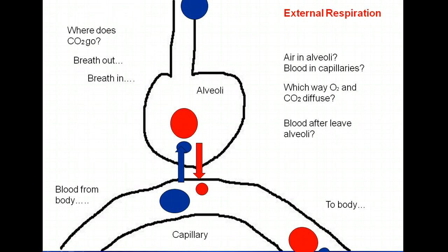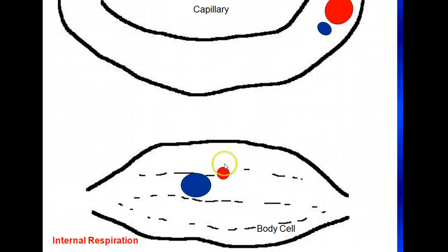The oxygen that you breathed in goes into the alveoli, diffuses into the bloodstream, heads to the body through the left side of the heart, heads down to the cells, and the cells can use that oxygen to make the energy they need to carry out their functions. So just review this over and over again, go through the questions from the PowerPoint, make sure you can answer those, and you should have no problem with this section of the test.